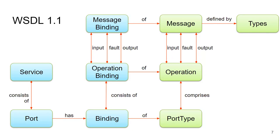We also need to know what messages are actually sent and received by the web service. There will be a set of messages using the types defined in the Types section, representing messages being sent and received by a client. Messages can be input and output messages — the message you send and the message you receive — and they can be fault messages when something goes wrong on the application or SOAP level.